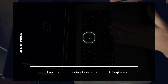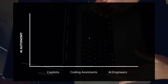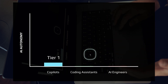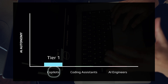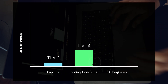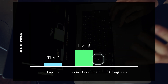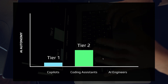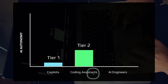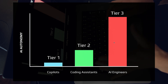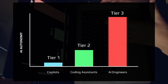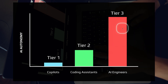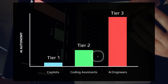Here's one more way to look at this: at each level we increase AI autonomy and decrease the amount of work and effort we need to do as engineers to generate value with software. Tier one — AI co-pilots — boost productivity significantly, but not as much as tier two. AI coding assistants supersede co-pilots by a massive multiplier. At the highest level, AI engineers will essentially replace all capabilities of coding assistants and co-pilots, effectively making them obsolete as they improve.